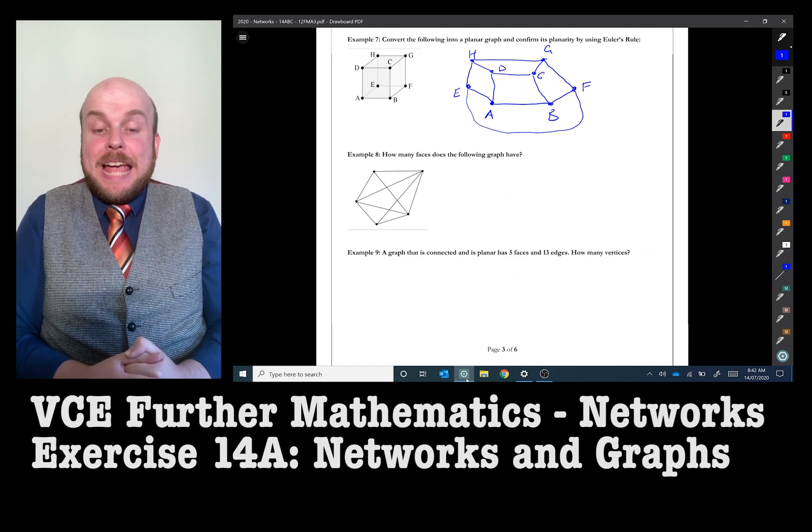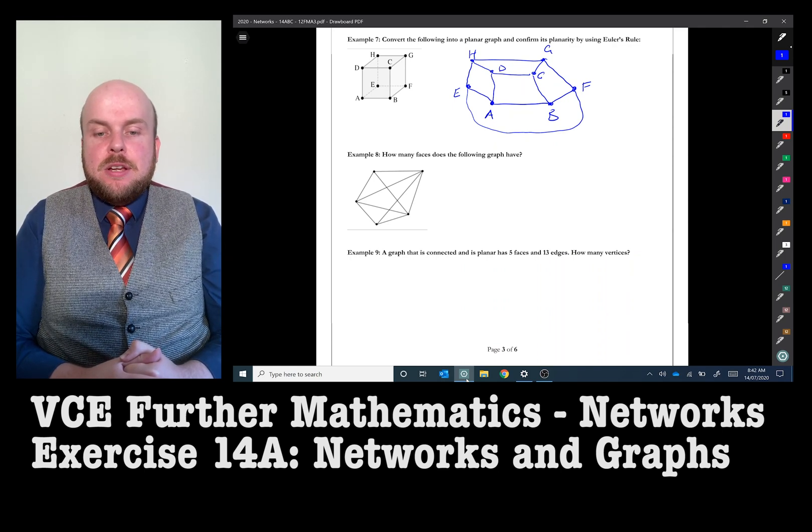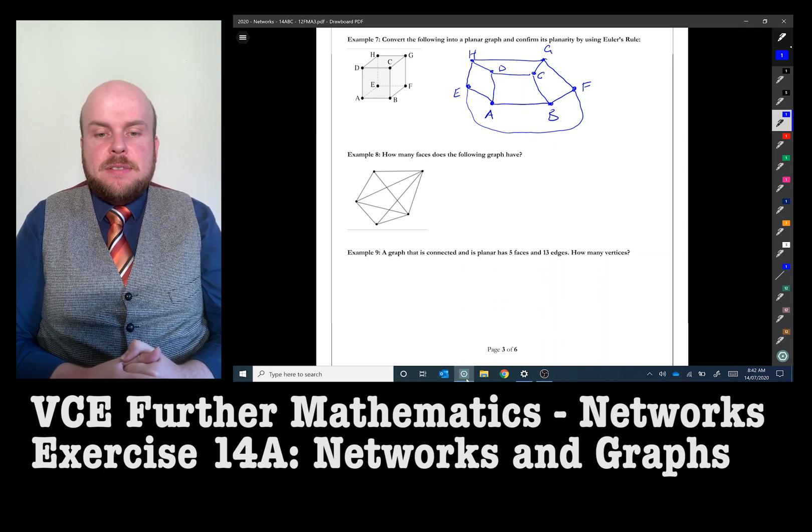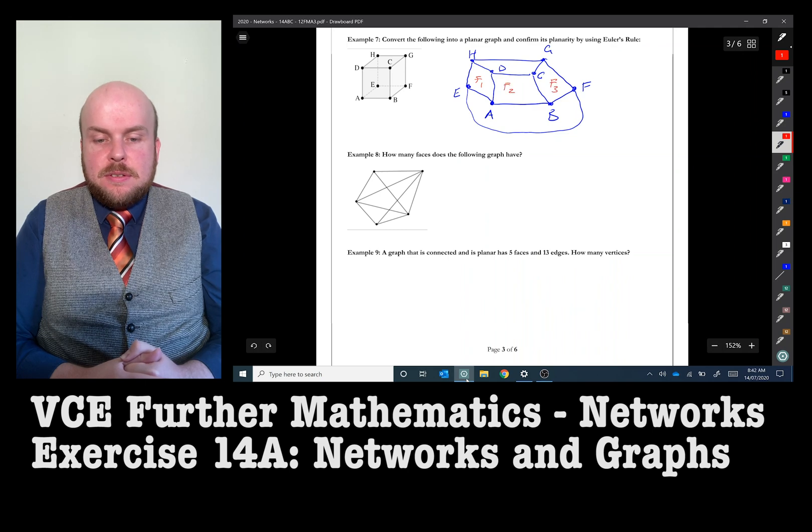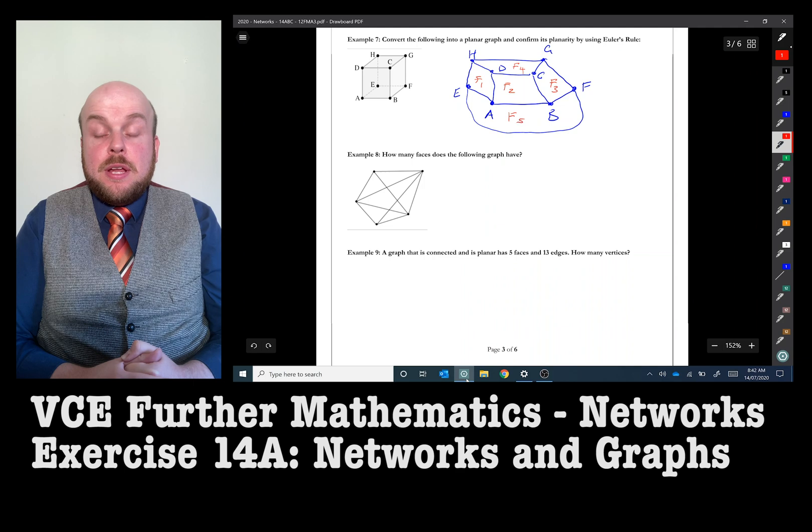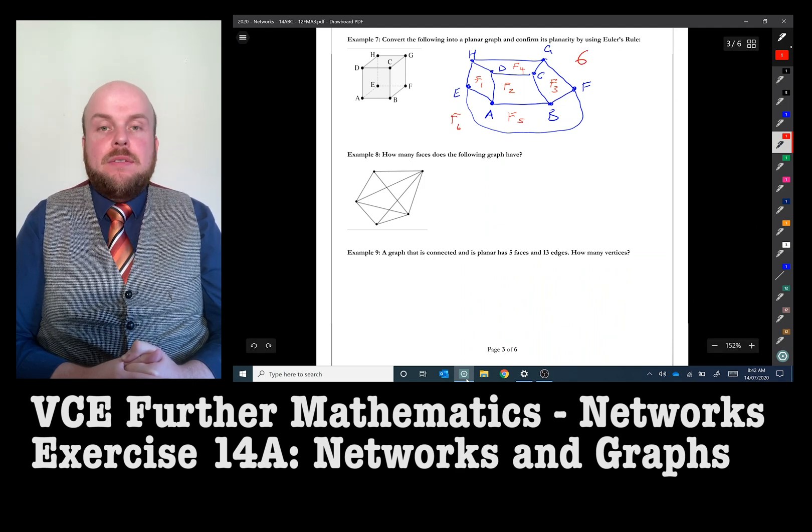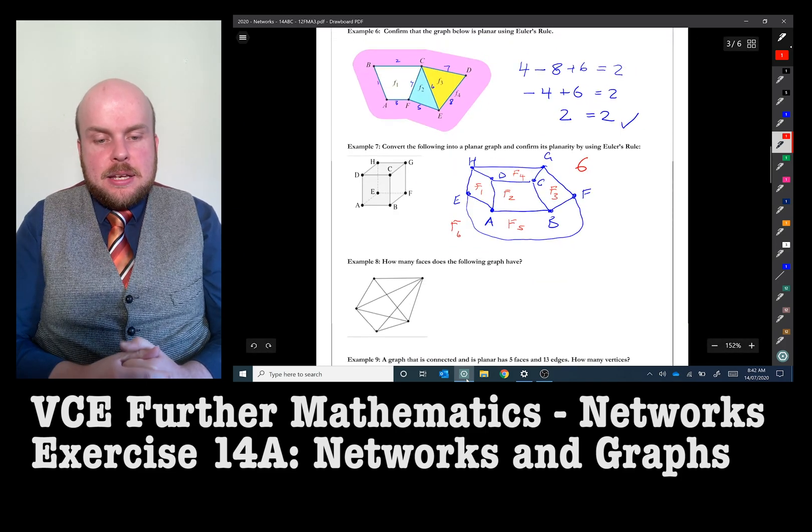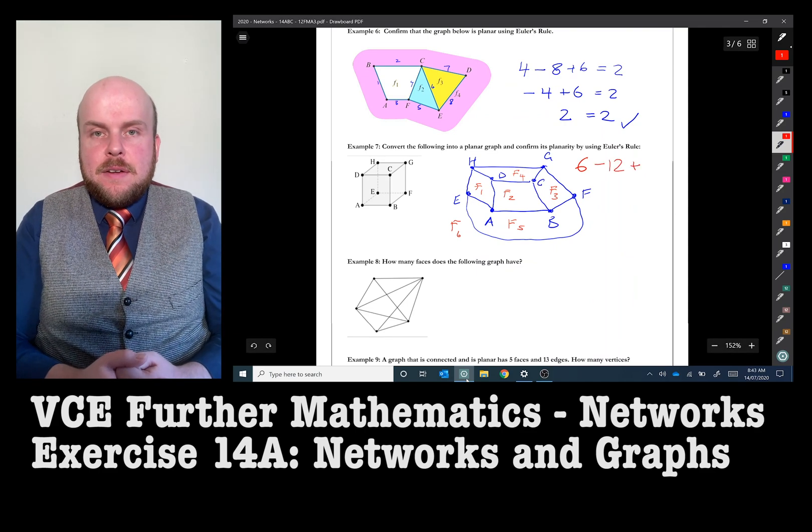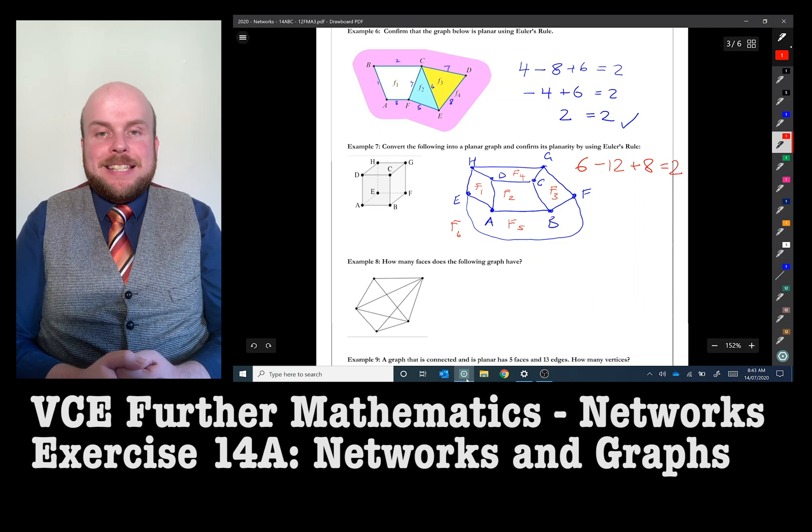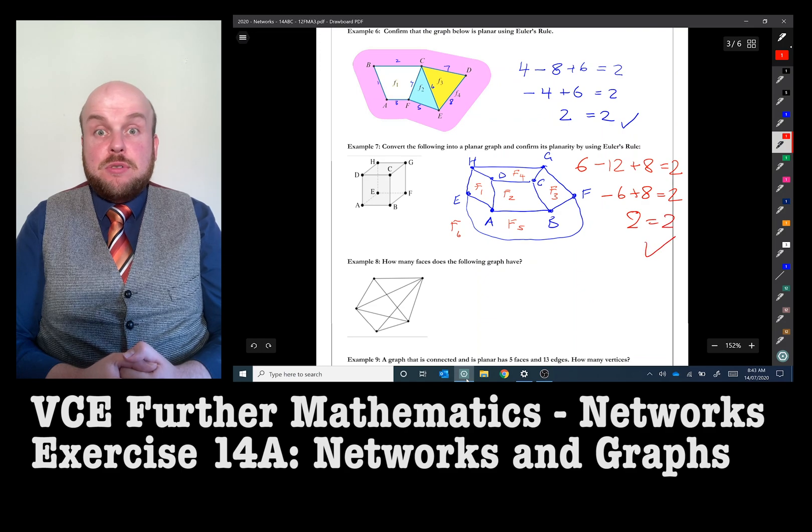So now I can simply count the edges and the faces and the vertices that I have. I can count here 1, 2, 3, 4, 5, 6 faces. And now I can count the number of edges that I have. There are 1, 2, 3, 4, 5, 6, 7, 8, 9, 10, 11, 12 edges. And A, B, C, D, E, F, G, H. There are 8 vertices. So 6 take away 12 plus 8 equals 2. Negative 6 plus 8 equals 2. Therefore, 2 equals 2.